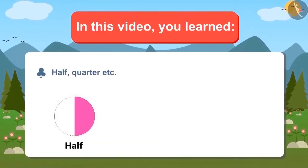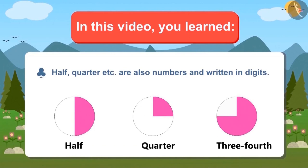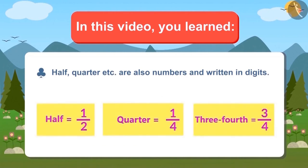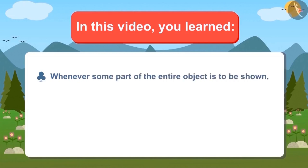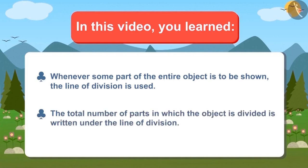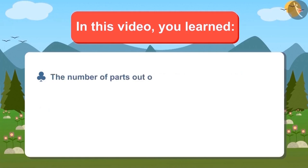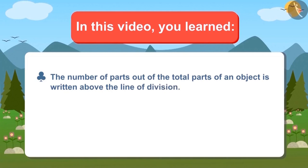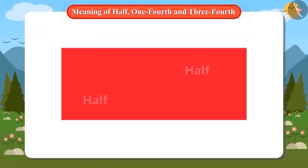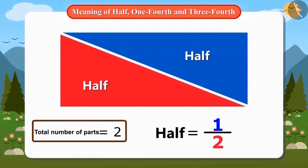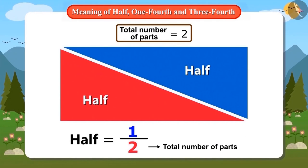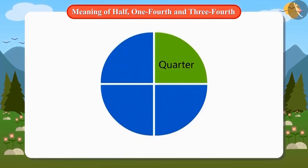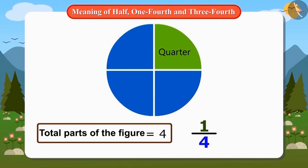In this video, we have learned that half, quarter, etc. are also numbers and they can be written in digits. And whenever some part of an entire object is to be shown, the line of division is used. The total number of parts in which the object is divided is written under the line, and the number of parts out of the total is written above the line. For example, to show half of an object, one by two is written, which means one part out of two. And one by four is written for one fourth, which means one part out of four.